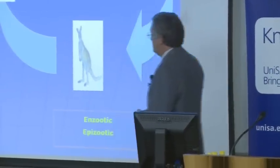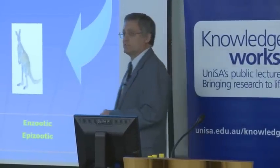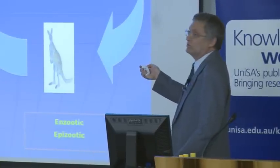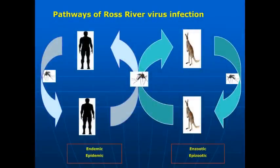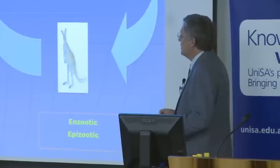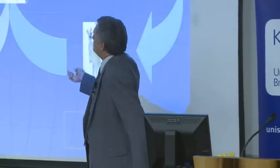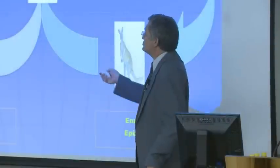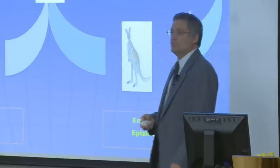Ross River virus evolved as an animal virus more than 50,000 years ago before there were people in Australia. It lives in kangaroos, transmitted from kangaroo to kangaroo by mosquitoes. Kangaroos gain immunity and the next generation of joeys become the next victims for transmission. When people arrived, less discriminating mosquitoes that also bite people could transmit the disease to humans, and you can then get an epidemic with human-to-human transmission as well.